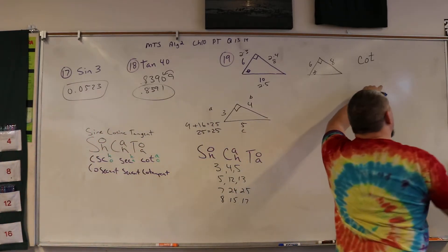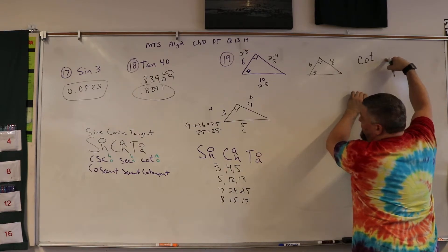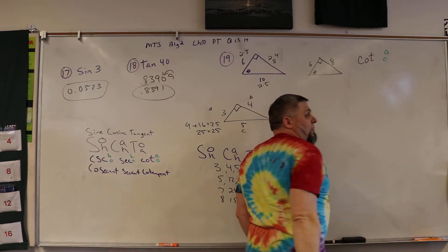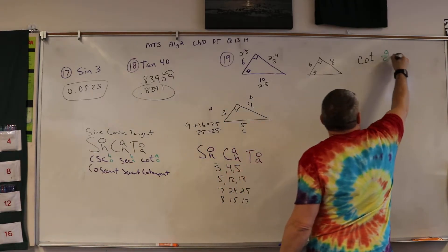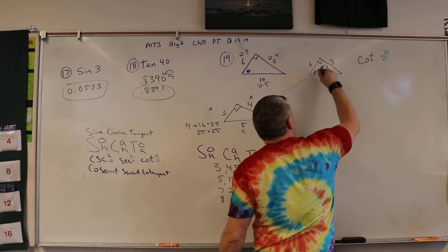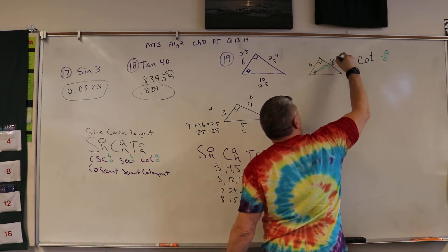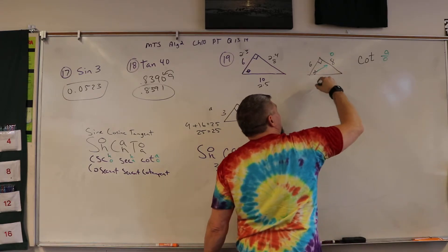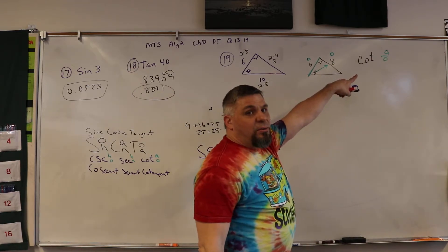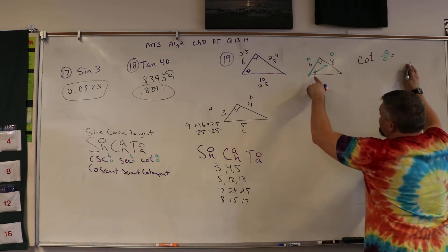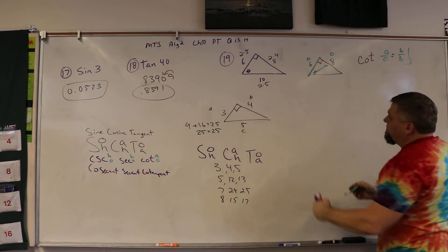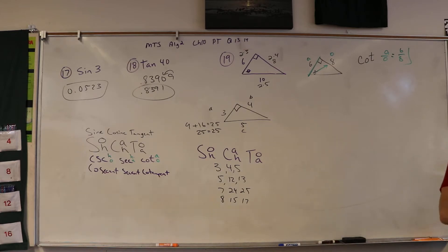So when they're talking about cotangent, they're talking about the flip of tangent. If tangent is O-A, this is A-O. So I just gotta know which one's opposite, which one's adjacent. I go from theta, so I know this is opposite, that means this is adjacent. If it's A-O, then the cotangent of theta is equal to 6 over 8. But we're not done, right? Because what goes into 6 and 8?